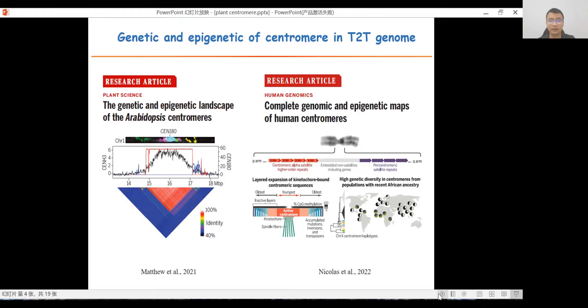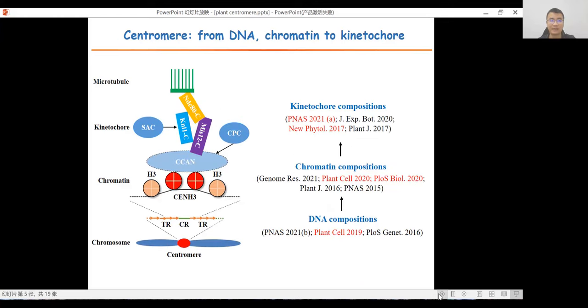Recently, complete genomic and epigenetic maps of Arabidopsis and human centromeres were assembled with the help of telomere-to-telomere genomic sequences. These results illuminated the high degree of structural, epigenetic, and sequence variation in these complex and rapidly evolving regions. During the last several years, I focused on DNA composition, chromatin composition, and kinetic composition in plant centromeres.